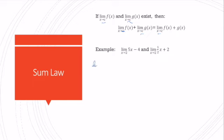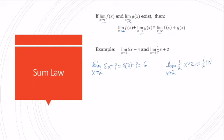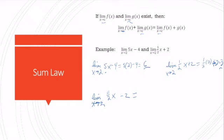So if I have the limit as x goes to 2 of 5x minus 4, we're plugging in 2: 5 times 2 minus 4 is 10 minus 4, which is 6. Then I have the limit as x goes to 2 of (1/2)x plus 2 — substituting in 2 gives (1/2)(2) plus 2, which is 3. So the limit of their sum, where 5x plus (1/2)x equals (11/2)x minus 2, equals 6 plus 3, which is 9.